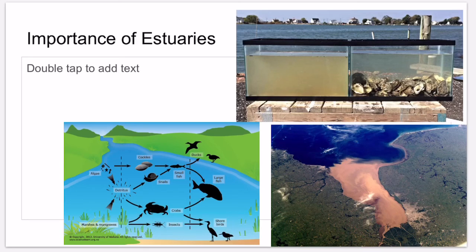Estuaries also filter out toxins. Bacteria and microorganisms break down larger chemicals through aerobic respiration, sulfate reduction, and the creation of methane gas. Salt marsh plants trap some chemicals and pathogens and move them into the soil where they are neutralized. Oysters filter out impurities from the water by eating them, trapping the toxins inside their bodies.